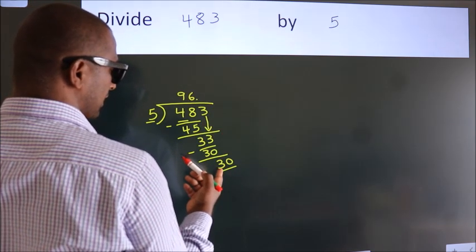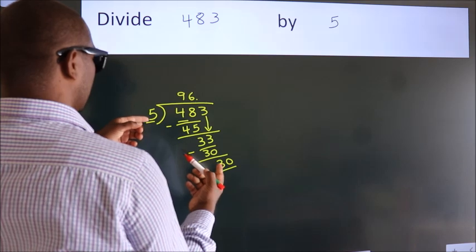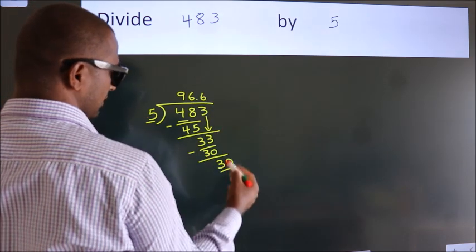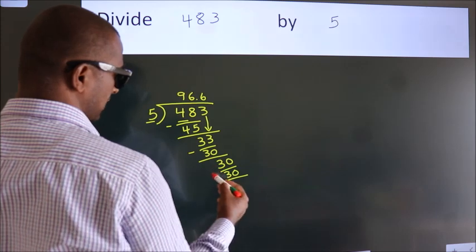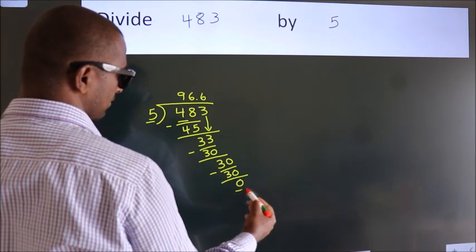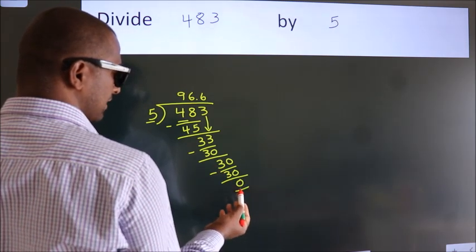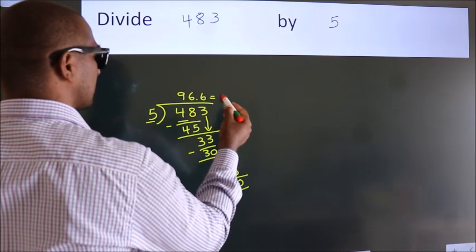When do we get 30? In 5 table. 5, 6, 30. Now we subtract, we get 0. We got remainder 0. So this is our quotient.